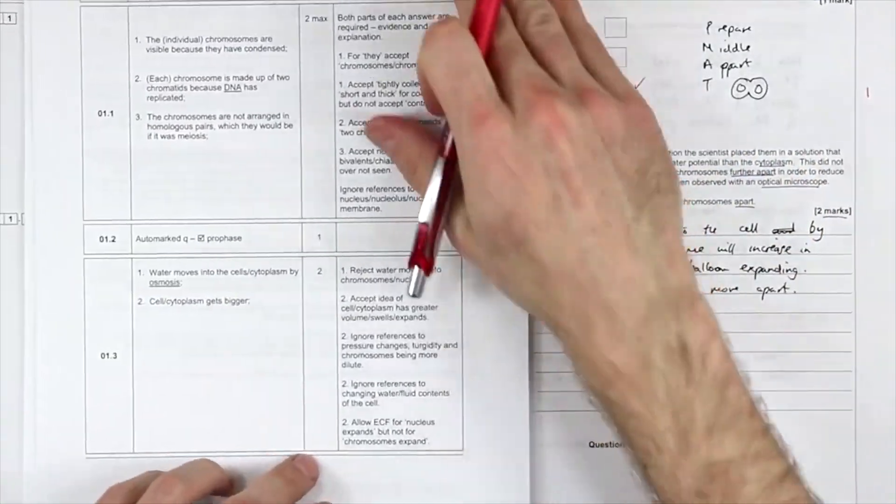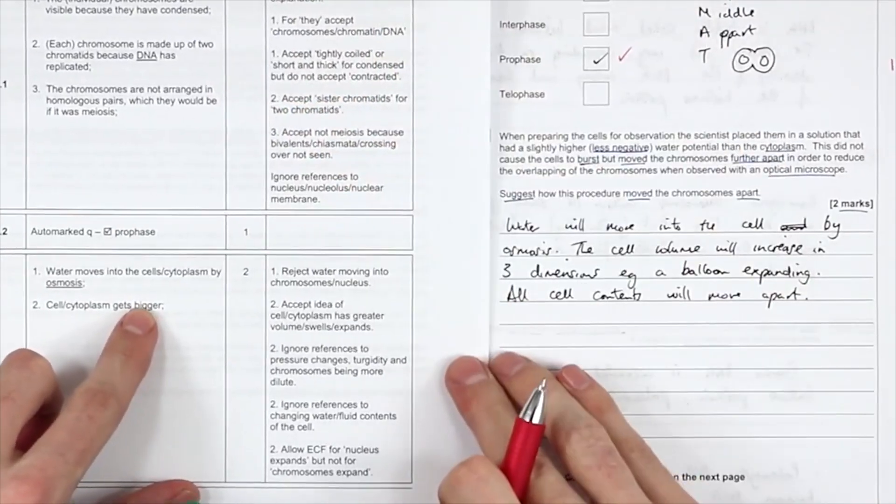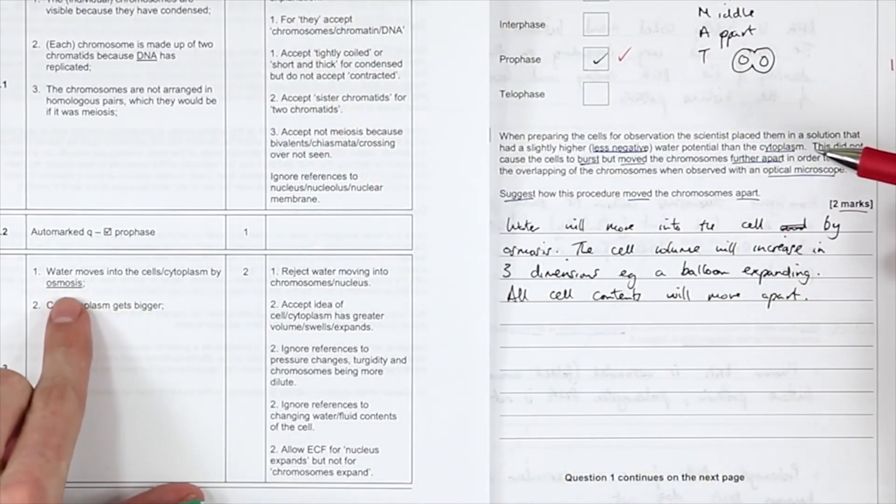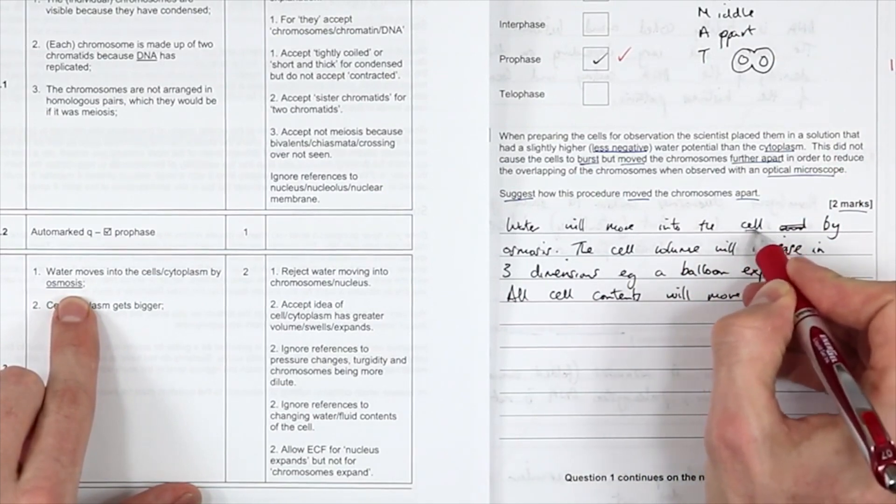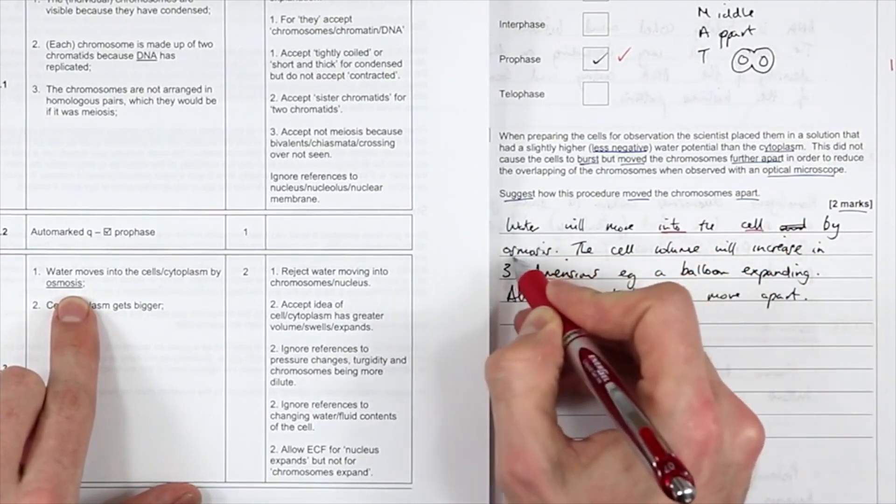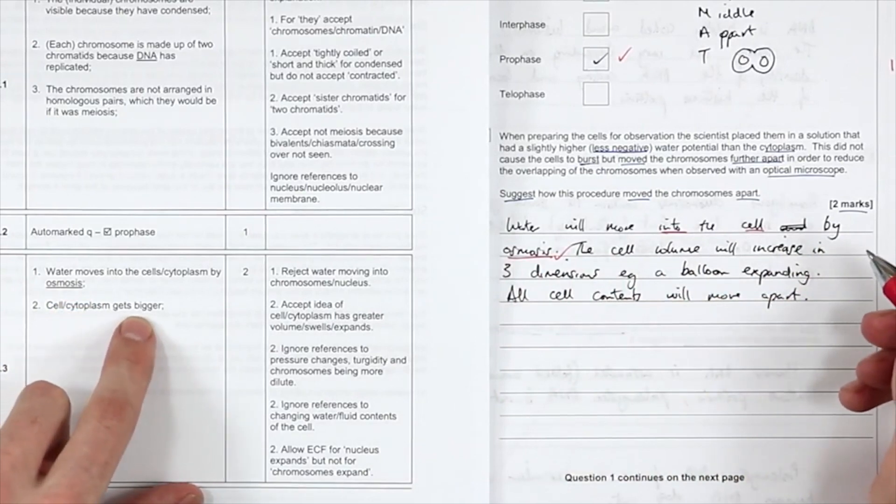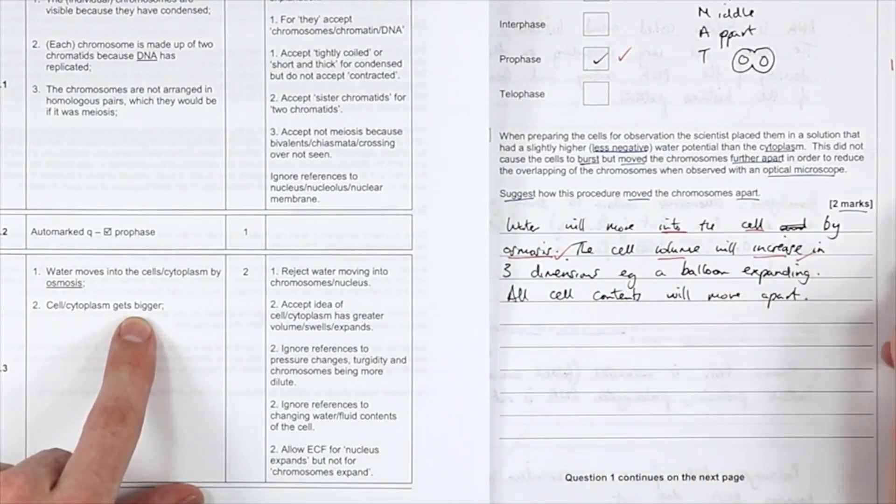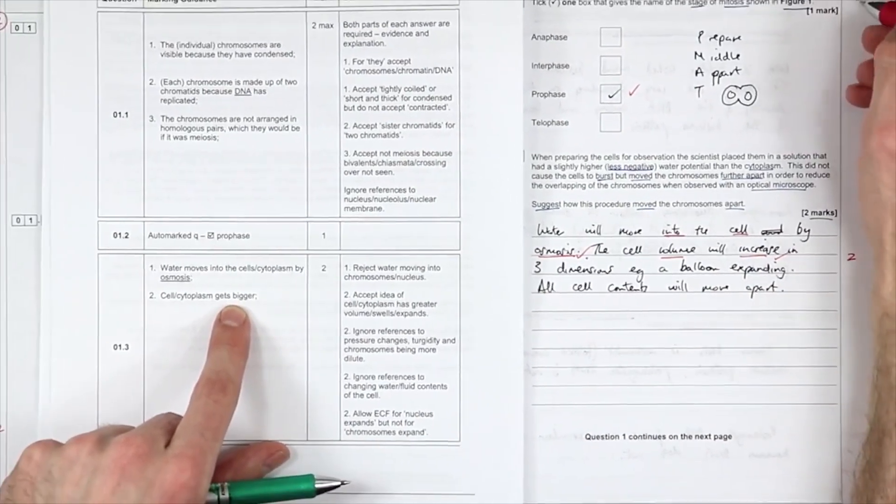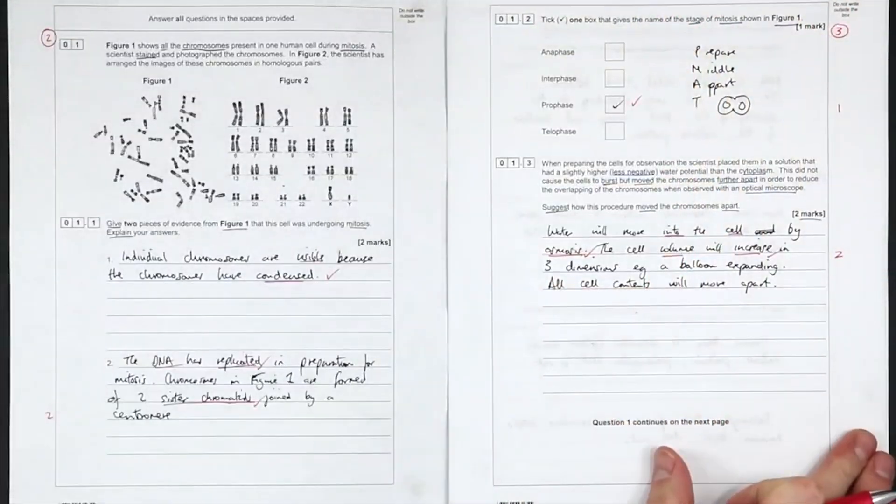What I didn't, I mean, this is a suggest. Obviously, I didn't know what the mark scheme was going to be here. The suggest questions are different every year. Water moves into the cytoplasm, moves into the cell, by osmosis. Cell gets bigger. The cell volume will increase. Giving three on this page.